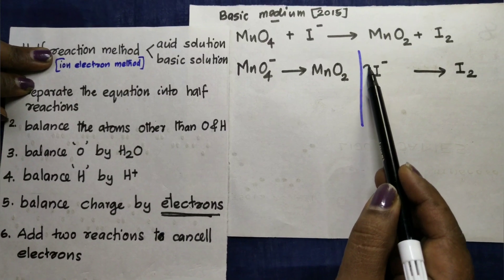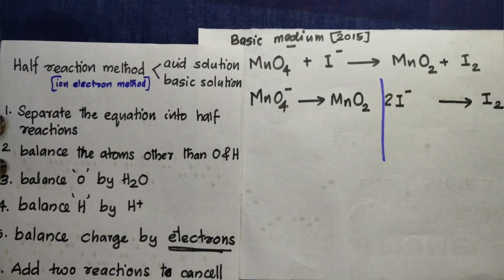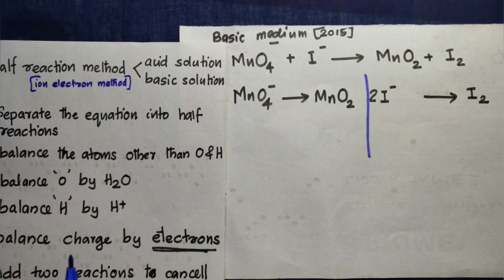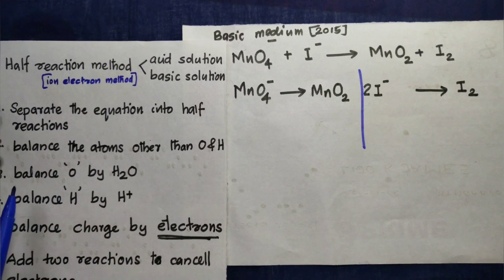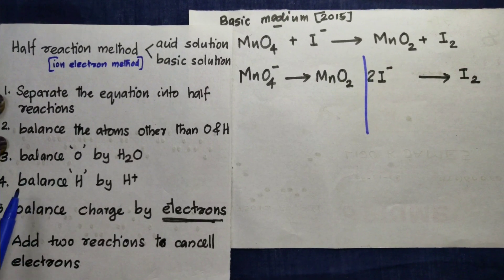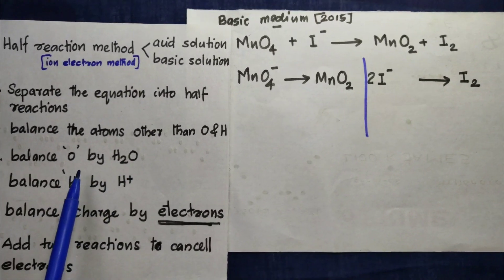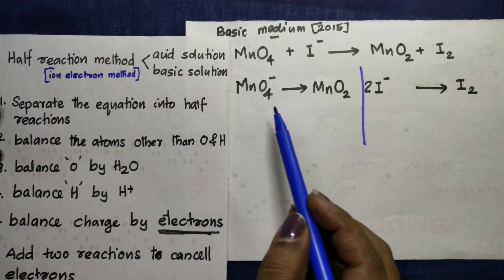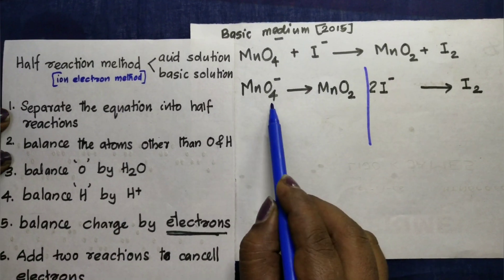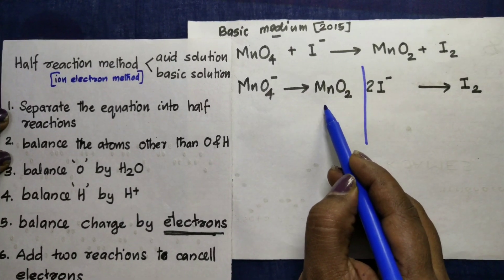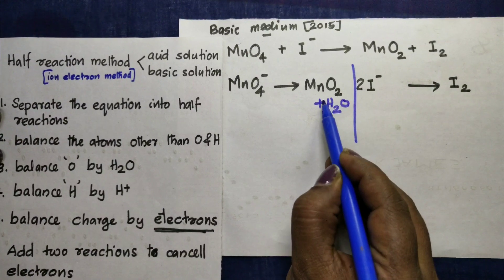How to balance? 2I⁻. You can always take one step at a time. Balance the oxygen atom with H₂O, then oxygen: here 4, here 2, here 2, here 2 oxygen.